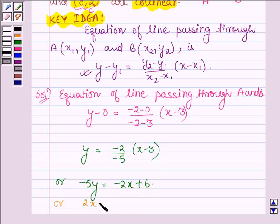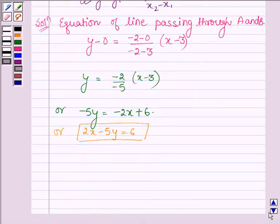or 2x - 5y = 6. So this is the required equation of the line which passes through point A and B. Let us denote this equation by equation number 1.